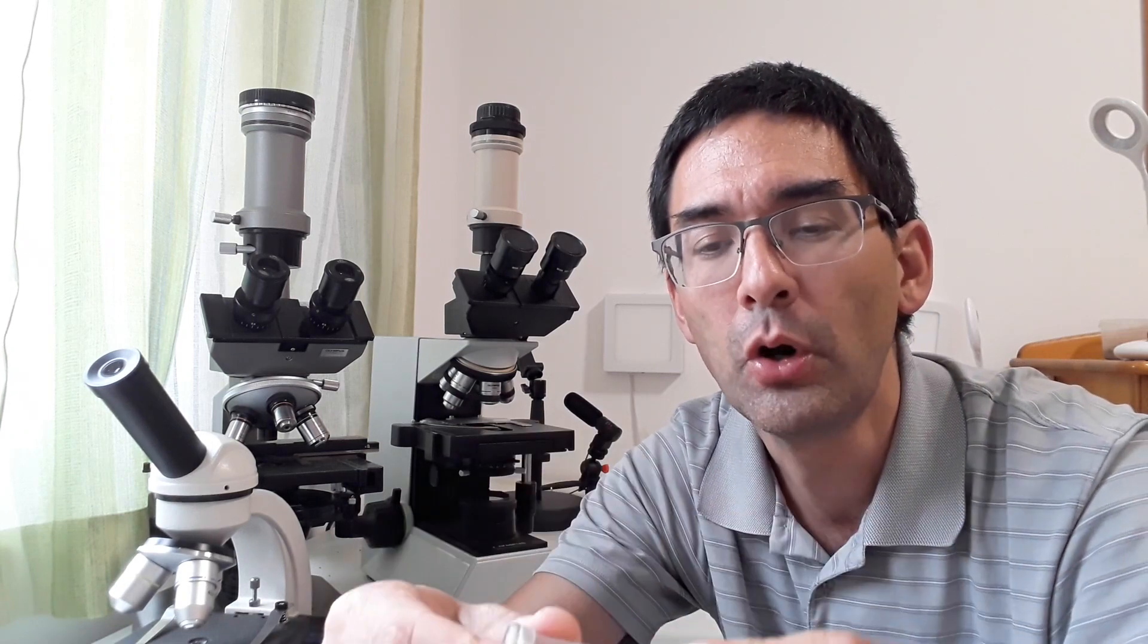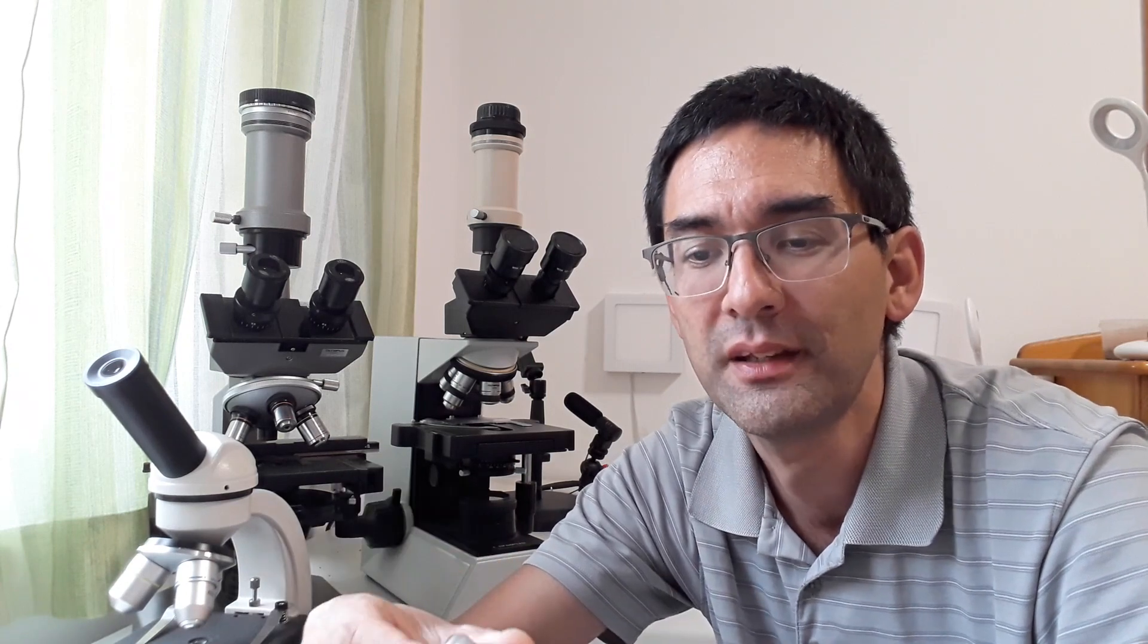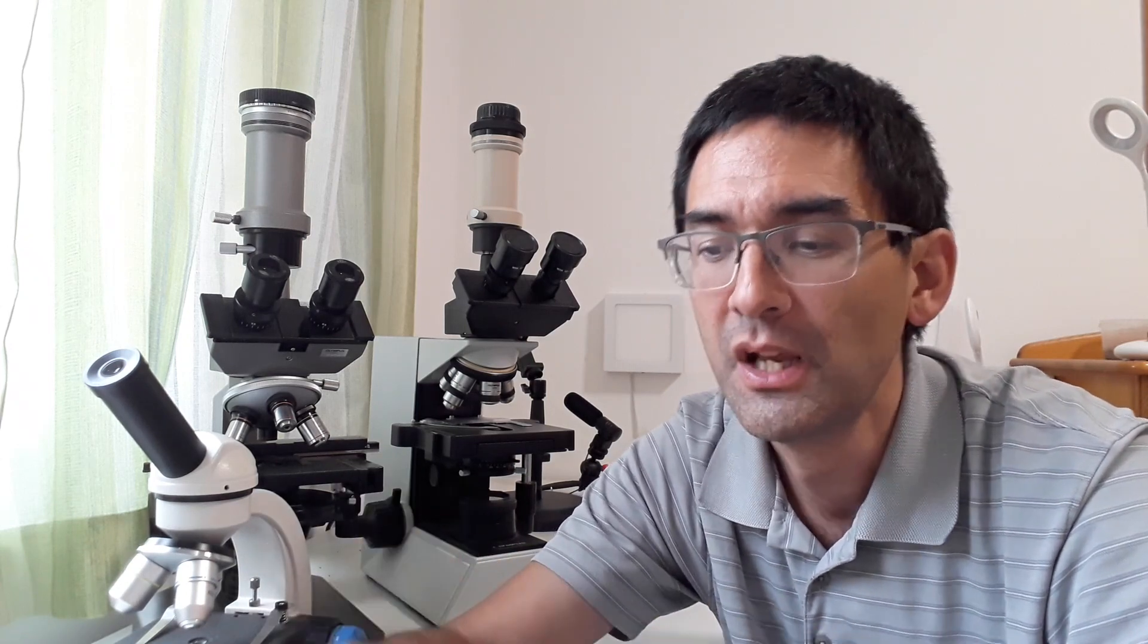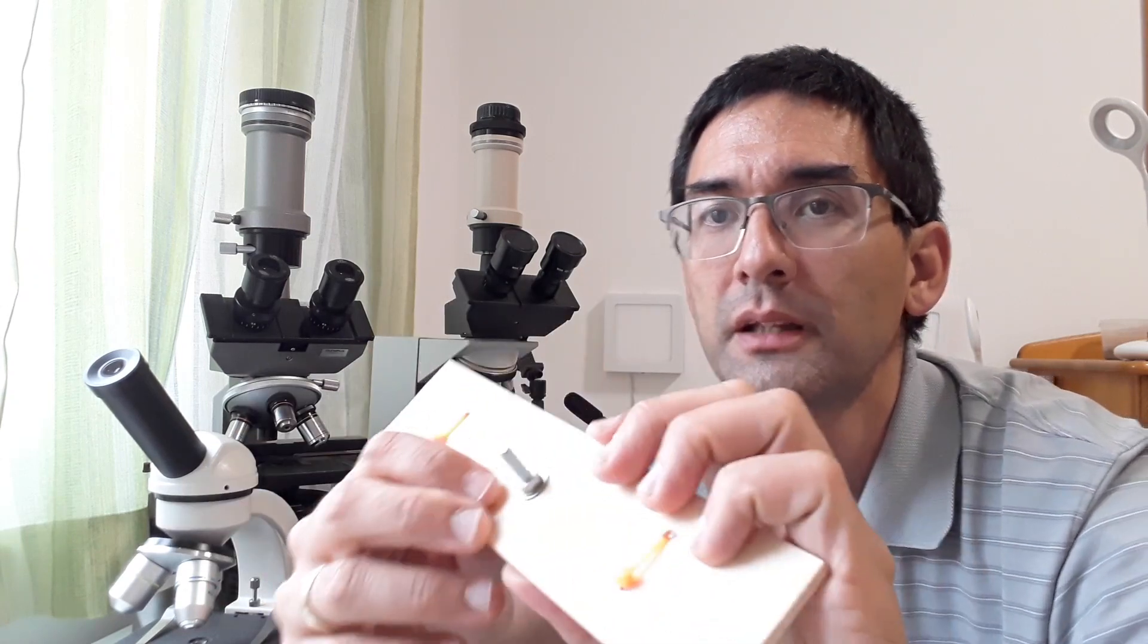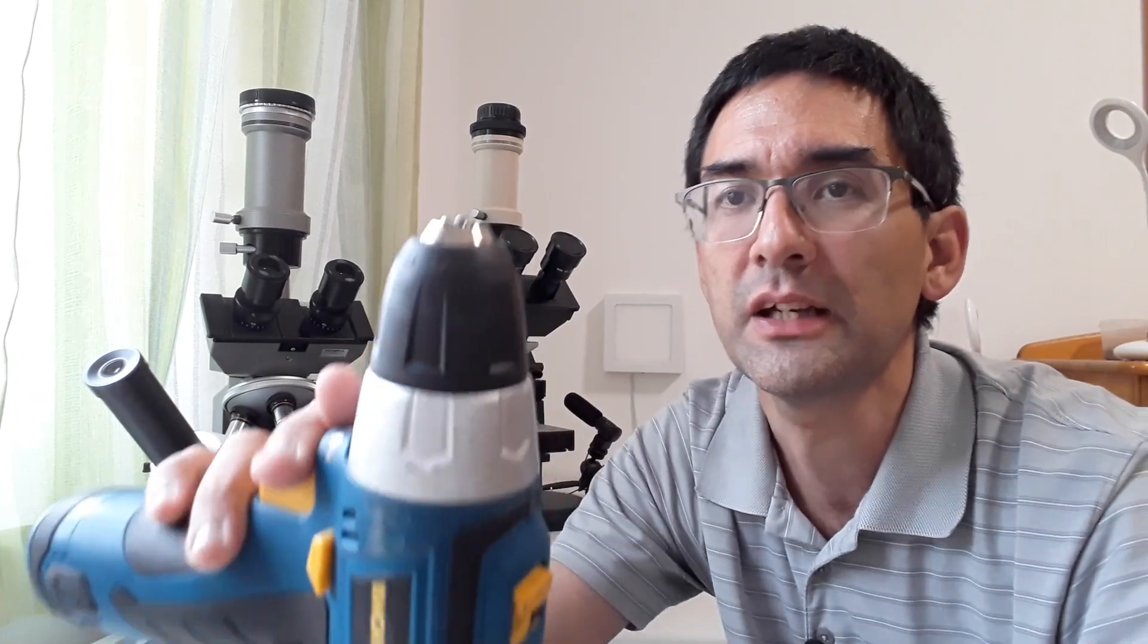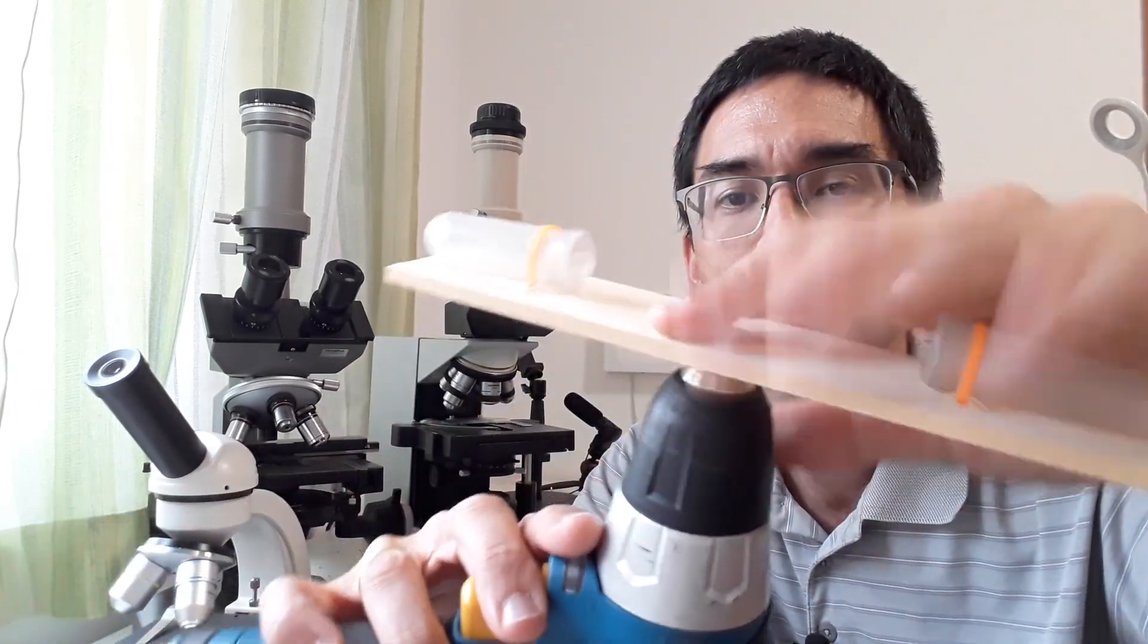This might allow you to see microorganisms you normally wouldn't see because the concentration is higher. Don't forget, if you take a sample of water and put it on a microscope slide, maybe the organisms are somewhere in the water but not on the slide because the concentration isn't high enough. By concentrating it, you actually increase the possibility. This is very easy to make: take a piece of wood, attach a screw, use an electric drill.